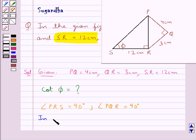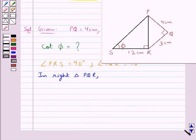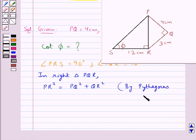Now, first we consider right triangle PQR. We apply the Pythagoras theorem: PR square is equal to PQ square plus QR square.